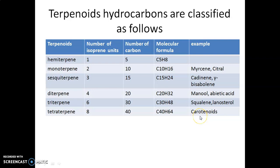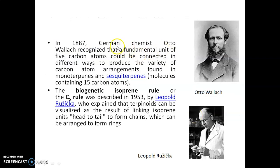In 1887, German chemist Otto Wallach recognized that the fundamental unit of five carbon atoms could be connected in different ways to produce a variety of carbon atom arrangements found in monoterpenes and sesquiterpenes. He first mentioned that terpenoids are made up of isoprene units, which are also present in different perfumes and in rubber itself. The pyrolysis of rubber revealed the presence of isoprene units, and that was the first recognition of these isoprene units.